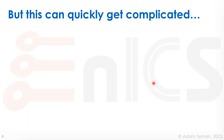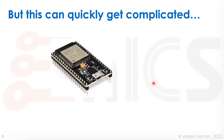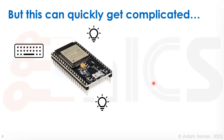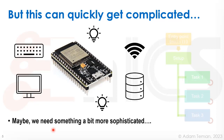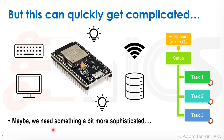But this can quickly get complicated. We have this other microcontroller and now it has its LED, but we also added some input device — maybe a keyboard. Maybe it has some other output device, another LED, a screen so we can interface with it and see what we're doing, and maybe it's connected to Wi-Fi and has some sort of storage. Now we have something that's really, really complicated.